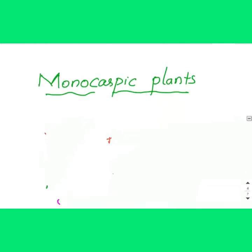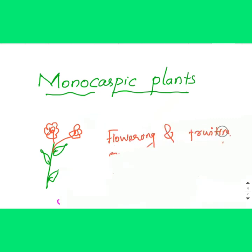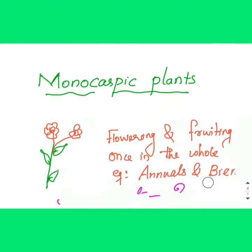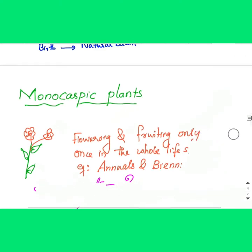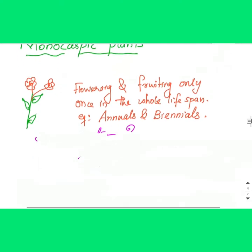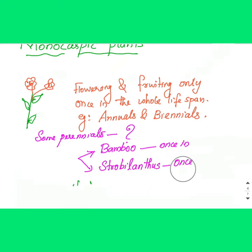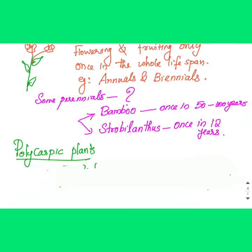Monocarpic plants are those in which we see flowering and fruiting only once in their whole lifespan. Examples include annuals and biennials. Among perennial plants, bamboo and Strobilanthes are also monocarpic. Bamboo flowers only once in 50 to 100 years, and Strobilanthes flowers once in 12 years.